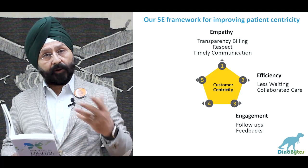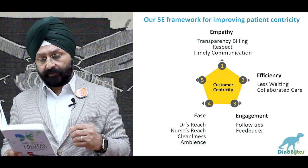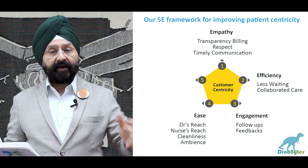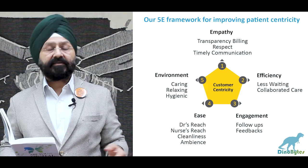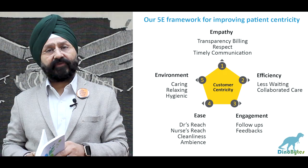Number 3 is Engagement — follow-ups with patients, and giving critical feedback in a very soft manner, so a lot of soft skills are required. Number 4 is Ease of doing business with the hospital — that is doctors' reach, nurses' reach, cleanliness, and the ambience of the hospital, which is very essential. Number 5 is Environment — the overall ecosystem should be caring, relaxing, and hygienic, so the patient feels comfortable. This is the 5E framework for patient centricity.